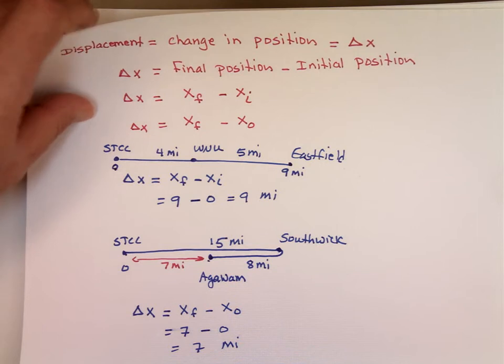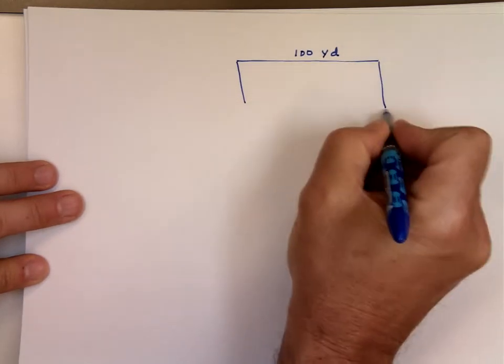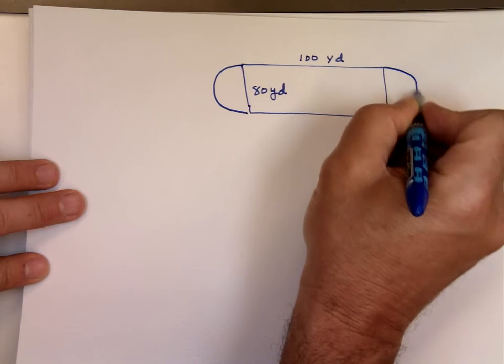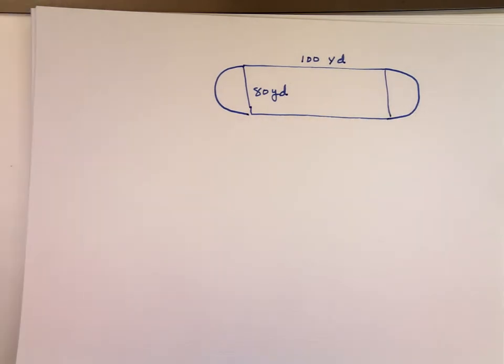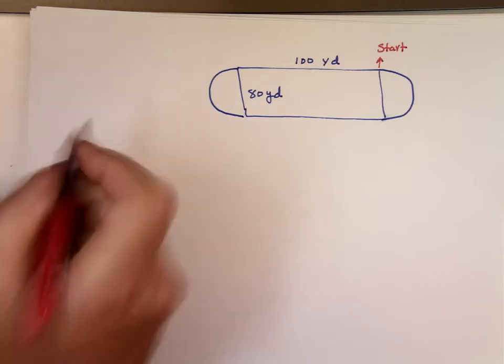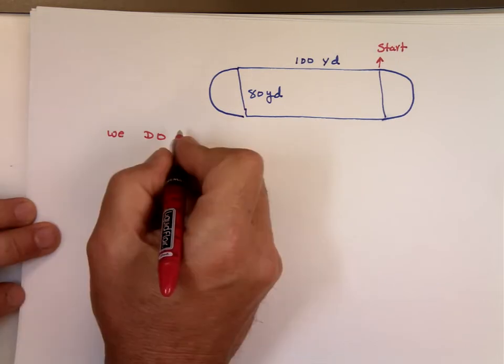Another example where displacement and distance might be different. We did that yesterday. We said you have a track of 100 yards long, it's a field here, by 80 yards wide. And you have half a circle on this end and half a circle on that end. If you start from here, let's say we do five and a half laps.